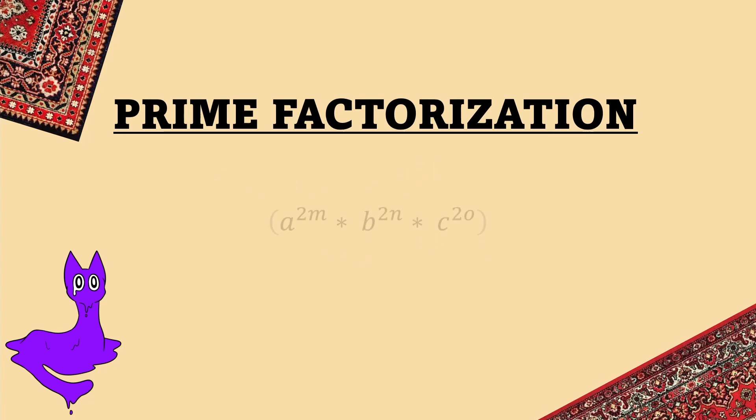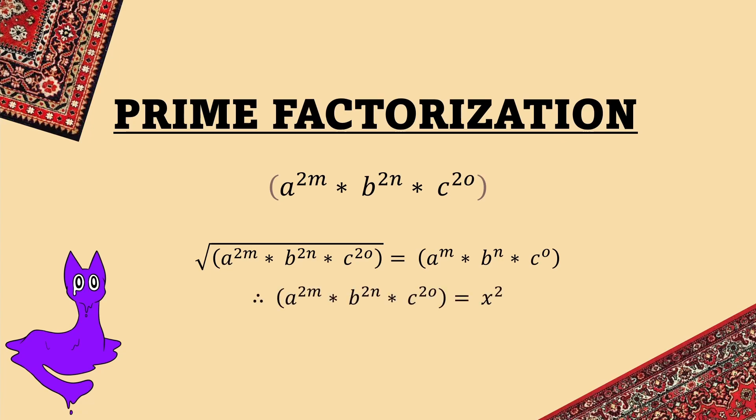And the same works in reverse. If you have a number where all of the exponents are even numbers, when you take the square root of that number, you will be left with a whole integer, meaning that that number is a square number by definition.